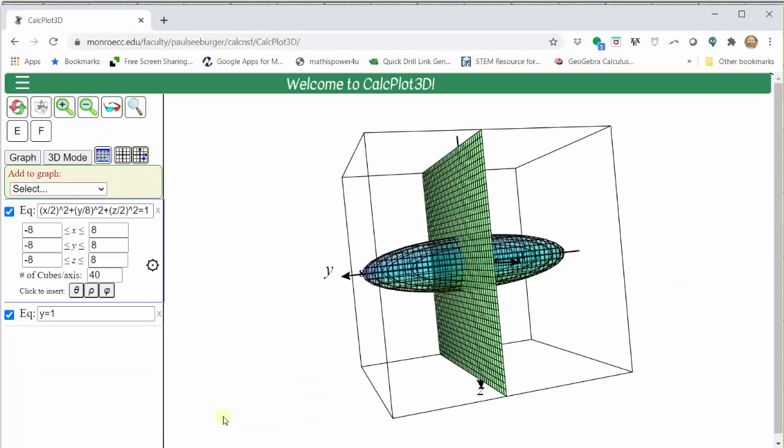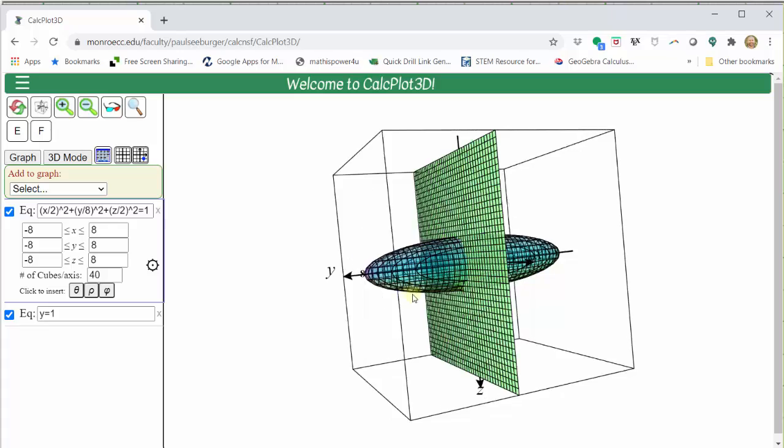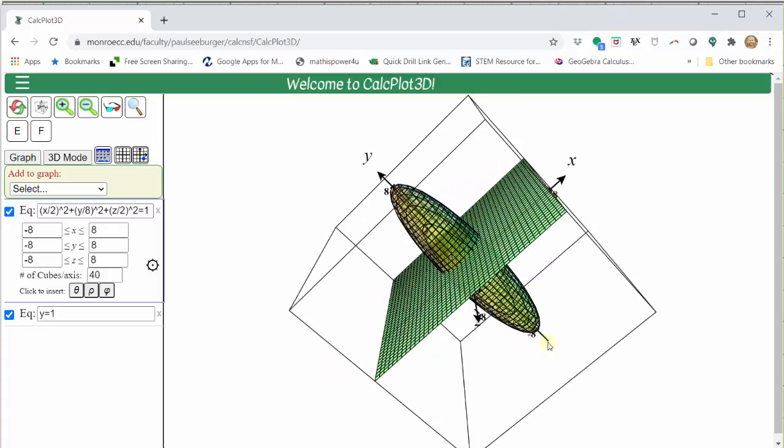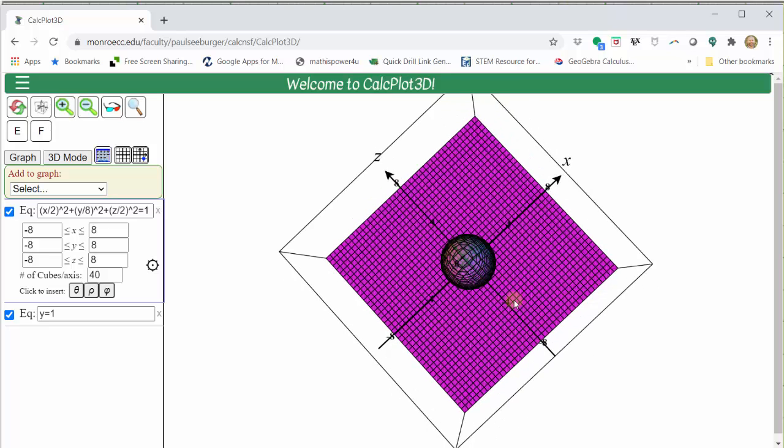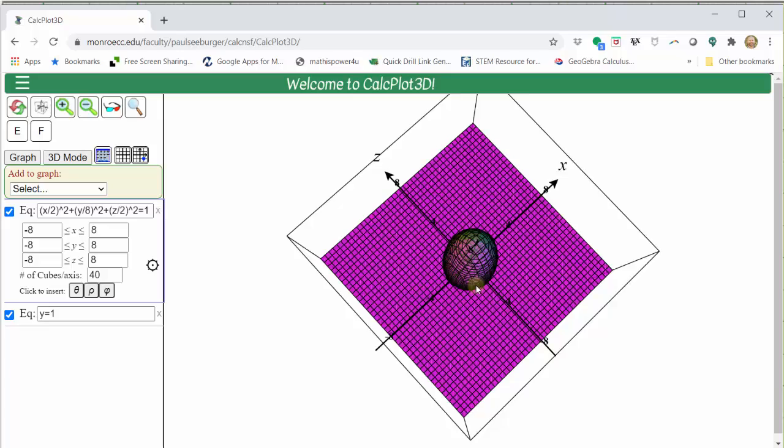Using the 3D Calc Plotter, I've already graphed the quadratic surface in the plane y equals one. If you look down on the plane y equals one, let's say here, we can see that the trace is a circle.